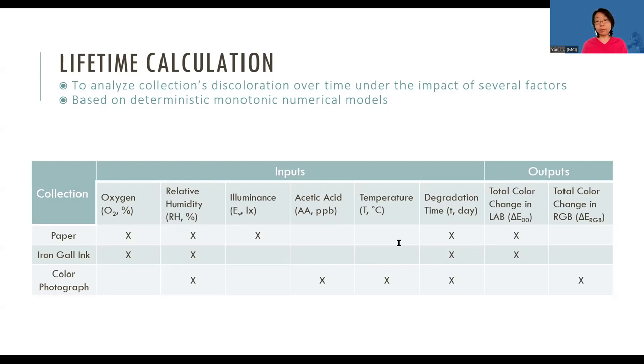For color photographs, the factors are relative humidity, acetic acid, and temperature. For paper and angle ink, the discoloration is defined in the LAB color space, whereas for color photographs, the discoloration is defined in the RGB color space.